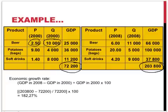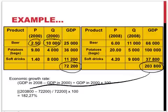You can calculate the economic growth rate by taking the GDP in 2008 — 203,800 — subtracting the GDP value in 2000, dividing by the value in 2000, and multiplying by 100, which gives a growth rate of 182%.